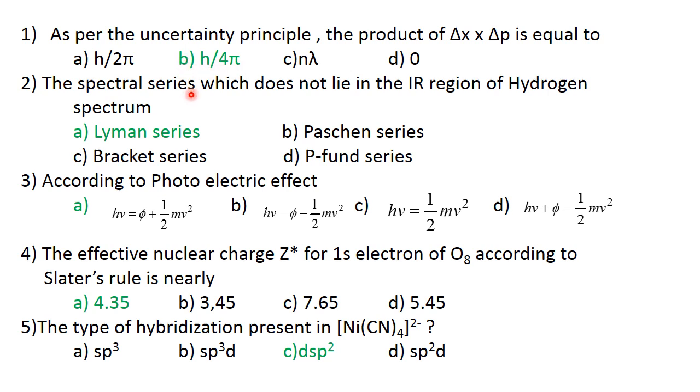The spectral series which does not lie in the IR region of hydrogen spectrum is Lyman series. All of them are Paschen series, Bracket series, Pfund series. The third is IR region, Lyman series is in UV region.